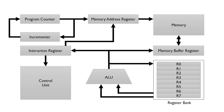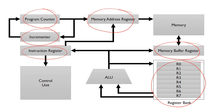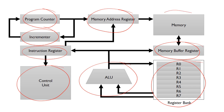In a little more detail, this shows an example architecture of a computer. We've got various parts: the program counter, incrementer, different registers including an instruction register, a memory address register, a memory buffer register, and also a register bank — in this example, a collection of eight registers. We've also got the ALU itself, and then the control unit that instigates what goes on inside the processor, and the memory.